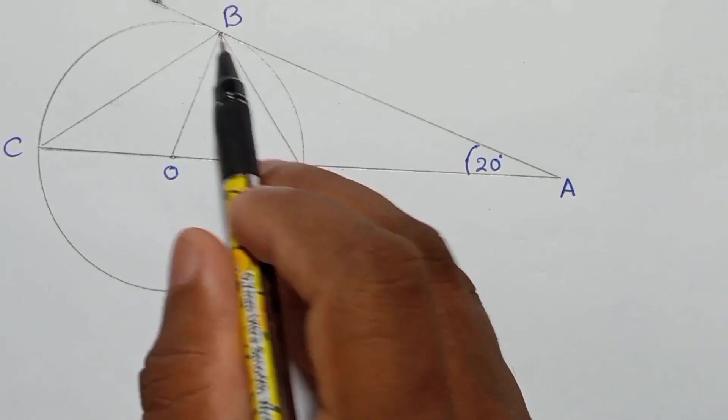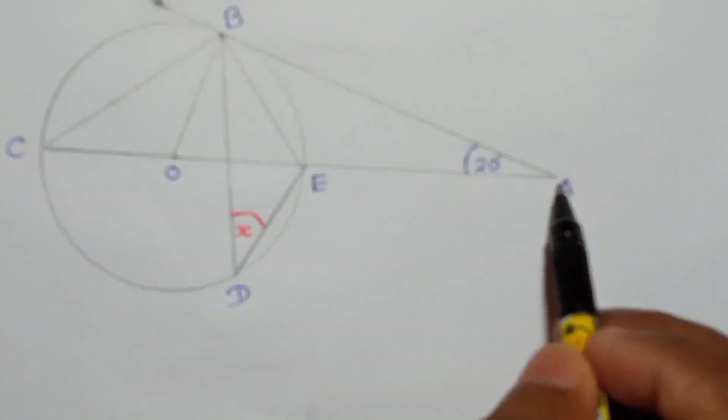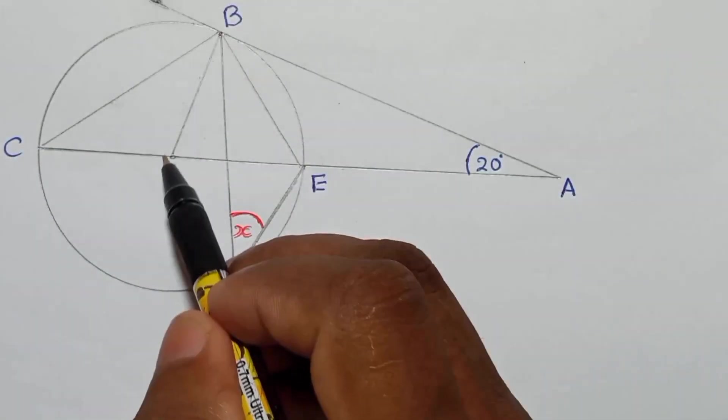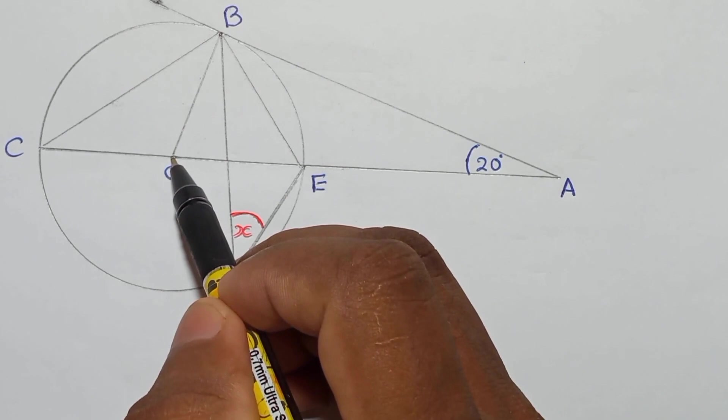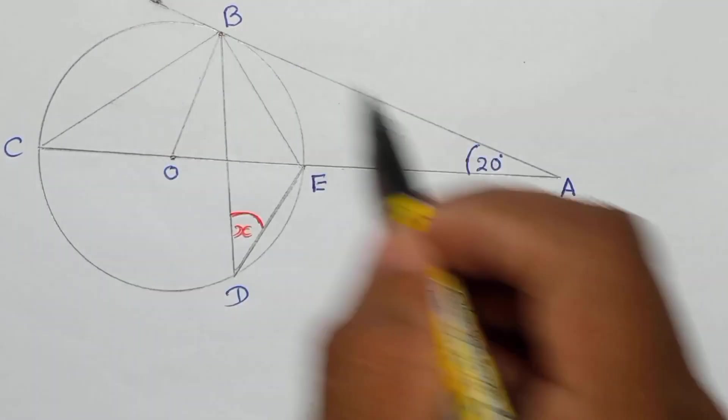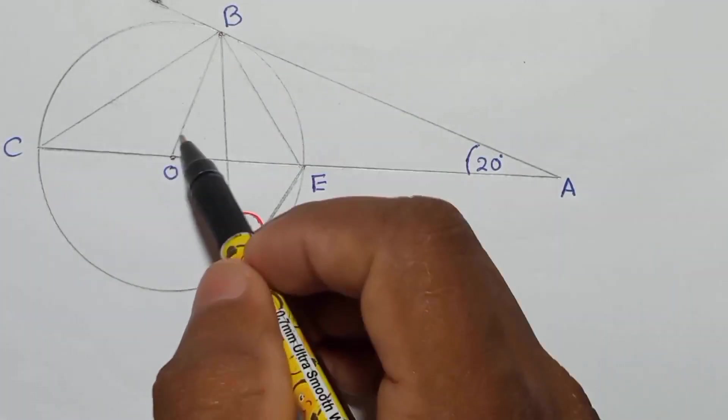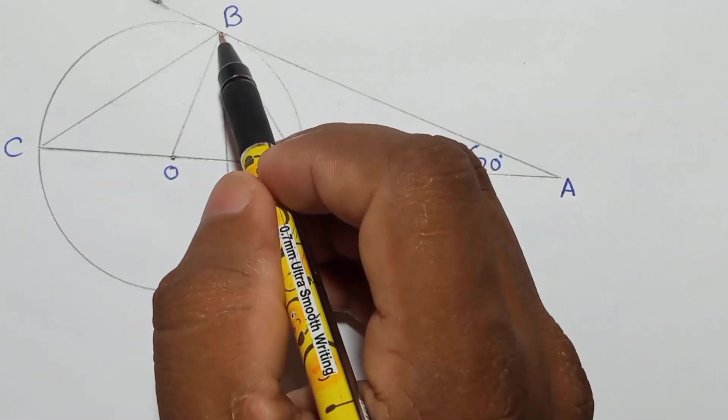Here AB is the tangent and BO is the radius. You can see that O is the center. This is the tangent BA. This is the radius. O is the center and B is the circumference point.